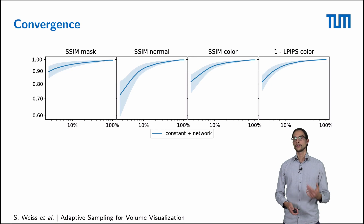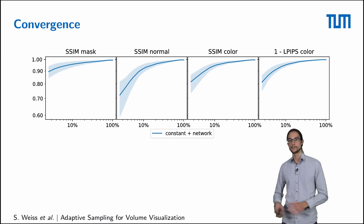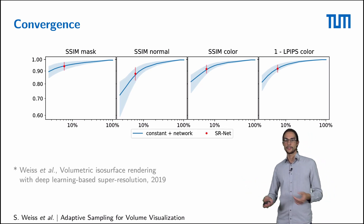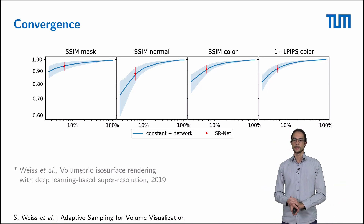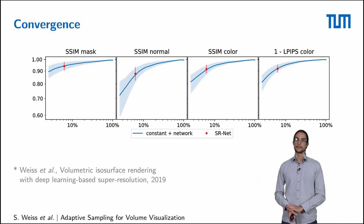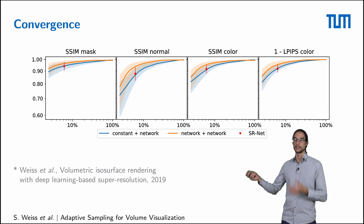Most importantly, how does the reconstruction quality relate to the number of samples? Here you can see a baseline where we use a constant importance map — uniform sampling — followed by the inpainting and reconstruction network. Unsurprisingly, quality increases with the number of samples. We compare ourselves with our previous work that used a fixed four-times upscaling network, meaning around 6% of samples, and we achieve nearly identical quality with this new adaptive pipeline, except that now we can vary the number of samples. Furthermore, when we enable the importance network that estimates the importance map, we arrive at a much better quality.